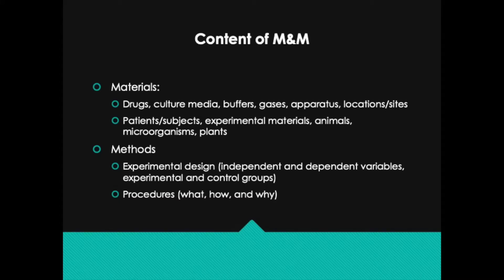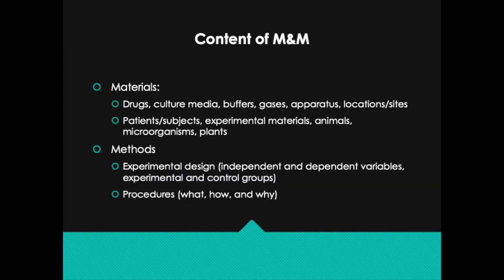So what should you put in the Materials and Methods section? For materials, these include things like drugs, culture media, buffers, gases, apparatus, locations or specific sites you studied, patients or subjects, experimental materials, animals, microorganisms, or plants. In terms of methods, you need to include information on your experimental design — mention your independent and dependent variables, your experimental and control groups, and any other pertinent information like randomization. Also describe the procedures: what you did, how you did it, and sometimes why you did it, especially when the rationale is not obvious or when you chose a particular method for a specific reason.